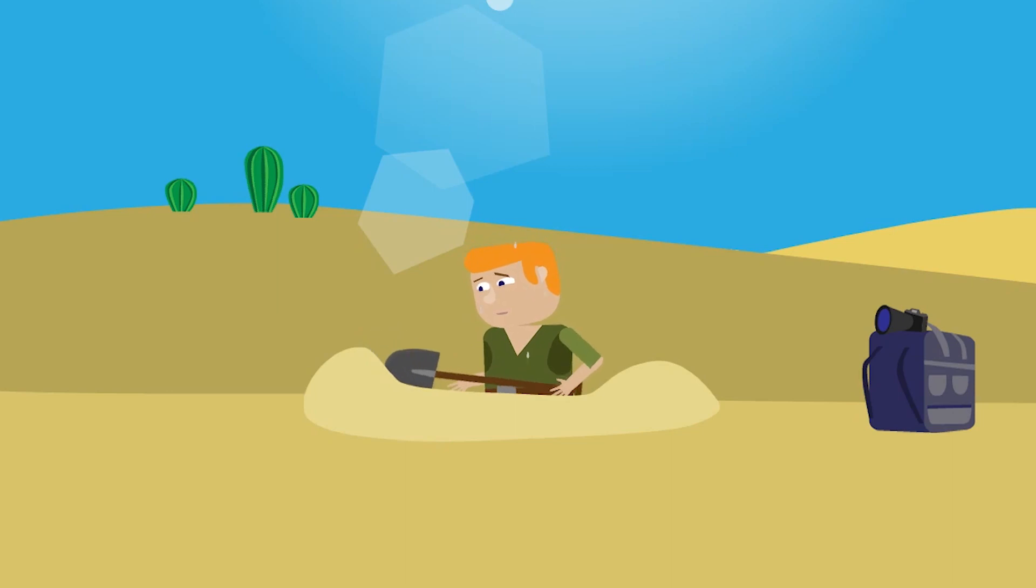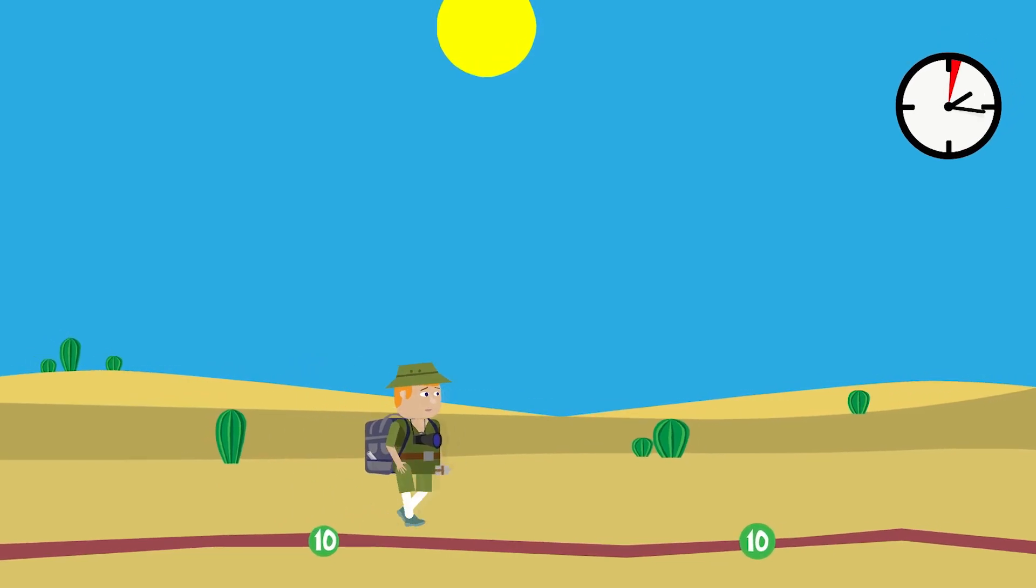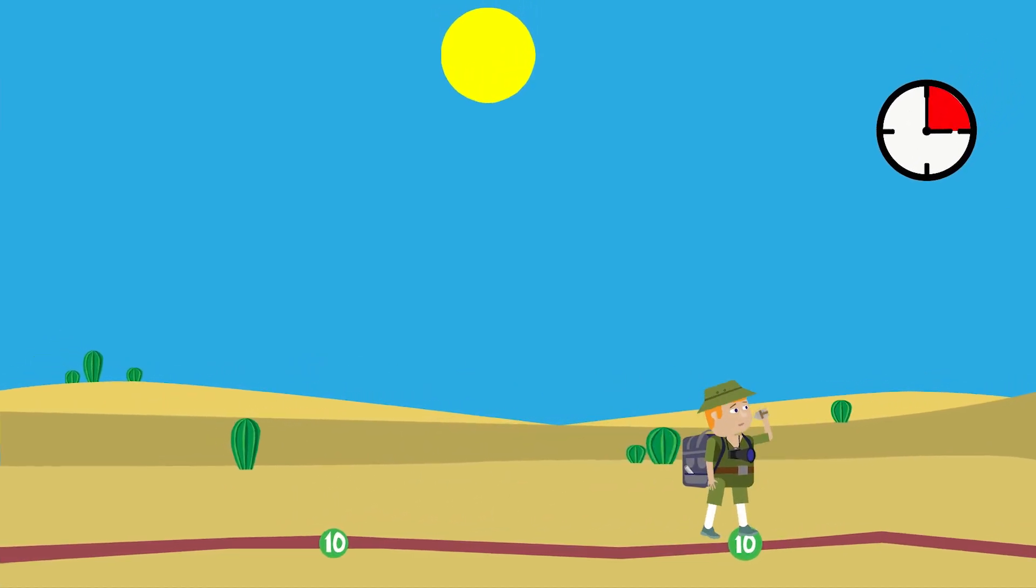When you need to make a halt, use natural shelters up to burying yourself in the sand. If possible, dig a hole in the sand and cover it with a piece of cloth, stretching it on pegs or bushes. During the transitions, take ten minute breaks every hour and rest in the shade.